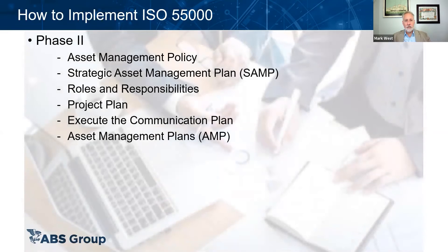In phase two, we get our asset management policy in place, our strategic asset management plan, and the roles and responsibilities. Roles and responsibilities are extremely important — it's not just so each person knows what they're supposed to do, but to make certain everything that needs to be done has an owner. It's very easy for gaps to form without good role and responsibility charts. Then we create a project plan, execute the communication plan, and start developing asset management plans according to the criticality of our assets.